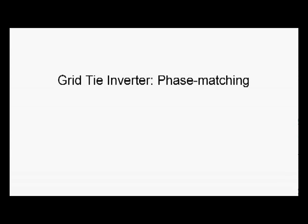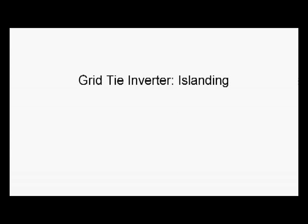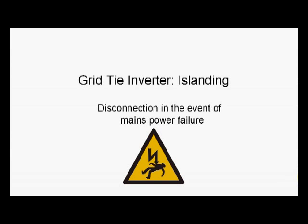We then asked what's special about a grid tie inverter. The first thing we looked at was phase matching — getting those sine waves in perfect alignment so that we end up adding one plus one to get two, rather than one plus one to get zero. We finished by talking about islanding: the disconnection in the event of mains power failure, a very important safety feature designed to protect power company line workers.